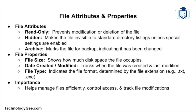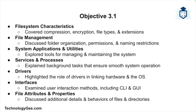To summarize, we've covered key concepts of an operating system including: file system characteristics offering compression, encryption, types, and extensions; file management involving organization of folders, permissions, and naming restrictions; system applications and utilities as tools for managing and maintaining your system; services and processes as background tasks that keep your system running smoothly; drivers as the links between hardware and the operating system; interfaces including the CLI and GUI; and file attributes and properties. Understanding these core concepts is vital for mastering how operating systems work and is key for passing the CompTIA Tech Plus certification exam.